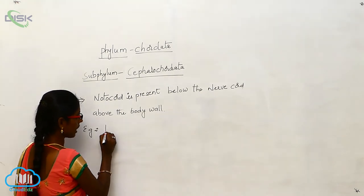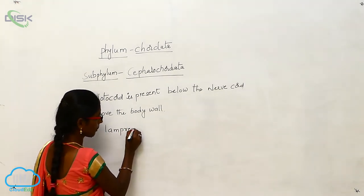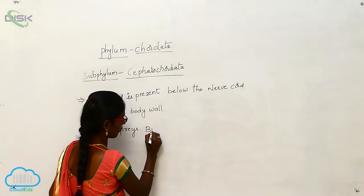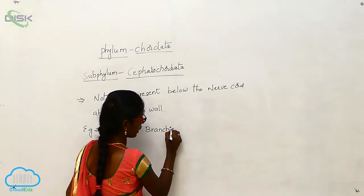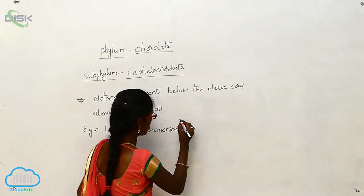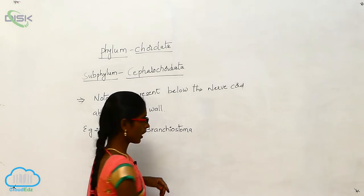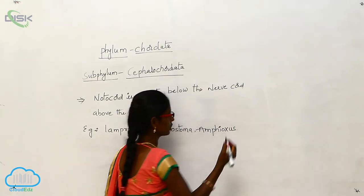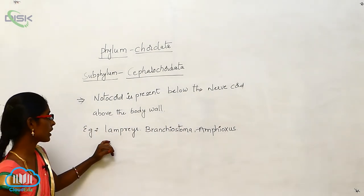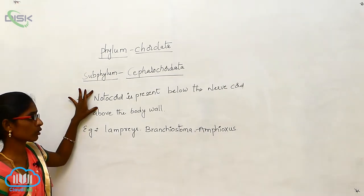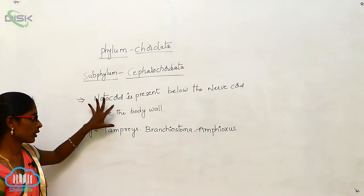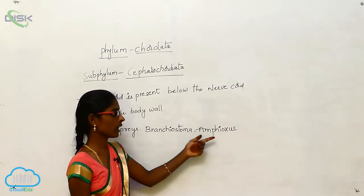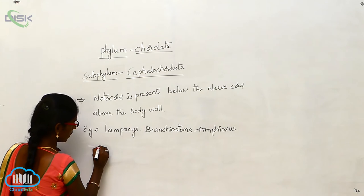Examples for the Cephalocardata are Lamprey (Lamprase), Brachostoma, and Amphioxia. The notochord is present below the nerve cord and above the body wall. Nerve cells are also present in this subphylum.